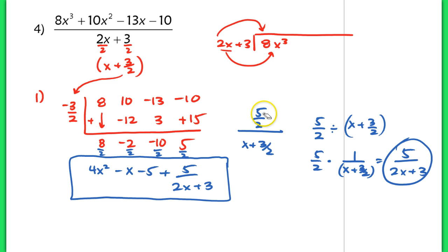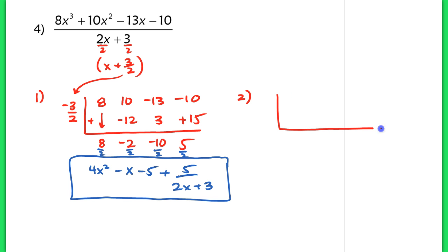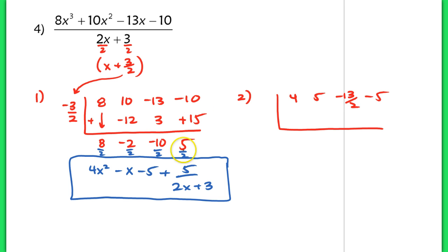This is the quotient of our beginning problem. Now for method 2: when I account for dividing out that 2 in the denominator to make x plus 3 halves, I'm going to do the same thing with the coefficients in the numerator upfront. So I take each of those coefficients and change them to 4, 5, negative 13 halves, and negative 5 — dividing out each coefficient so I don't have to do it at the end.